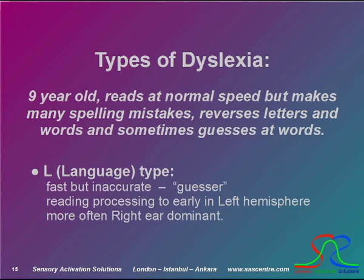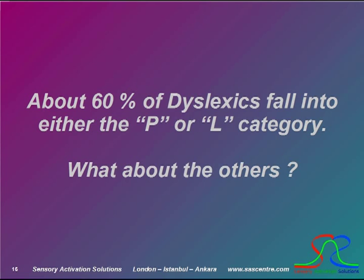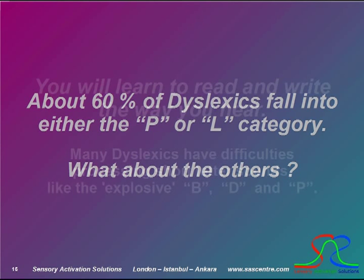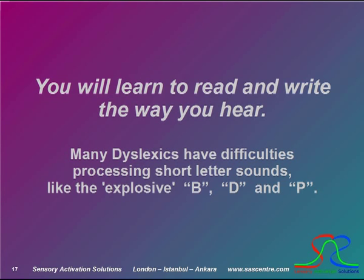About 60% of all dyslexics can be categorized as either being a P or an L type. But what about the other 40%? Research in the USA has found that many dyslexics — up to about 80% actually — have difficulties with short sounds. The way we hear, and more importantly the way we process speech sounds, will determine to a great extent how we learn to read and write. If we have difficulties processing short letter sounds like the explosive B, D, or P, then that will impact on our reading comprehension and speed of reading aloud or writing. It can also induce mistakes in our writing, or even in our speech.